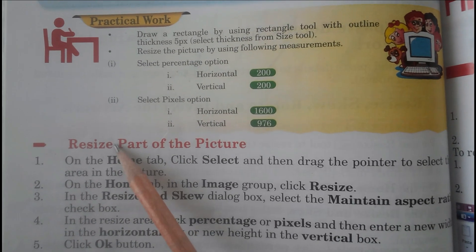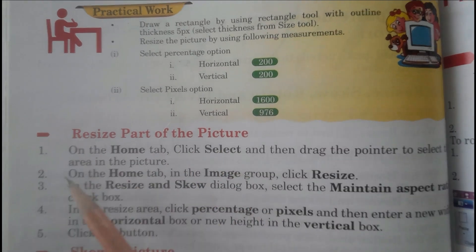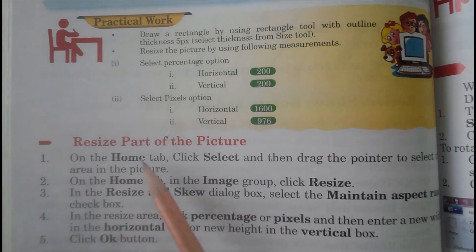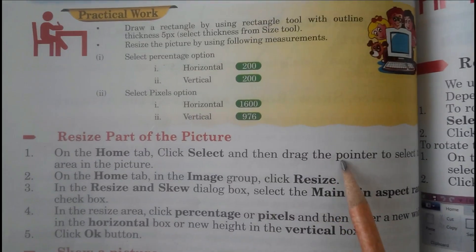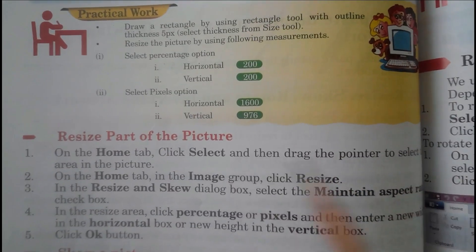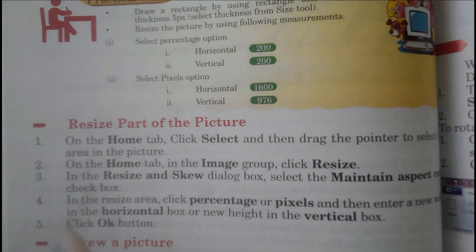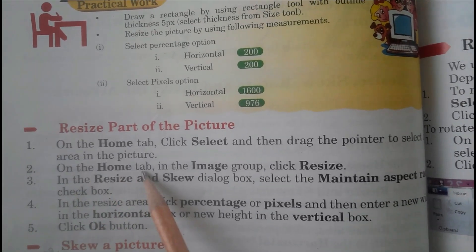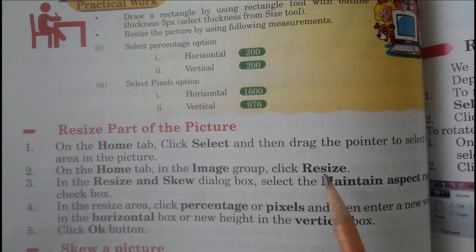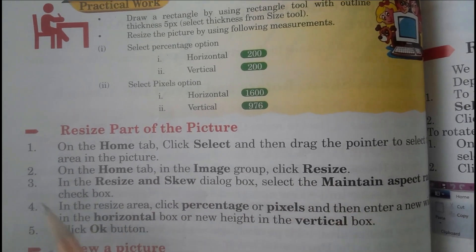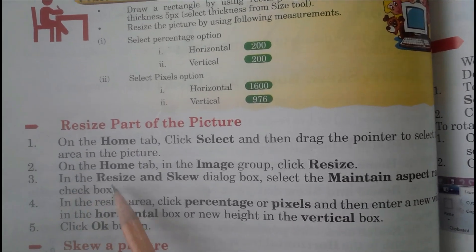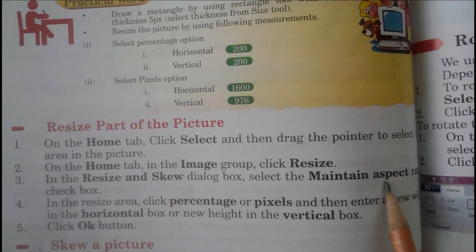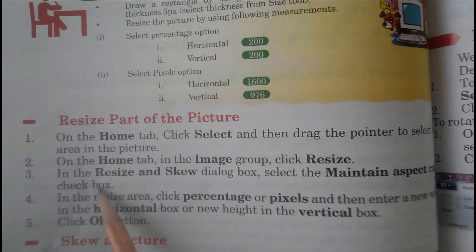Now, resize part of the picture. Step one: on the Home tab, click Select, then drag the pointer to select the area in the picture. Step two: on the Home tab, in the Image group, click Resize. Step three: in the Resize and Skew dialog box, select the Maintain Aspect Ratio check box.